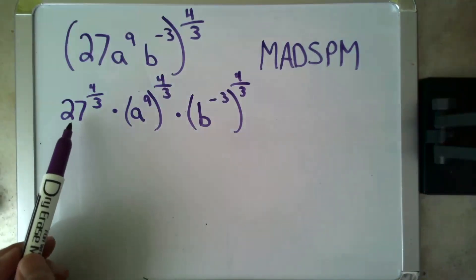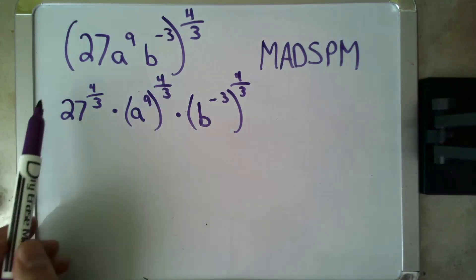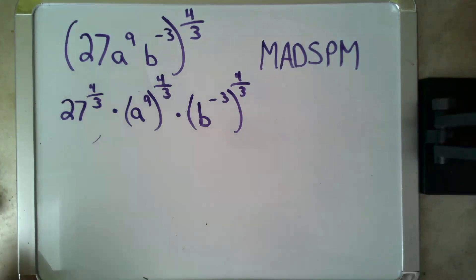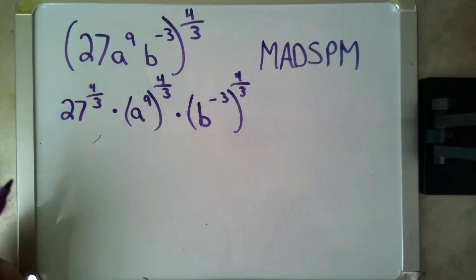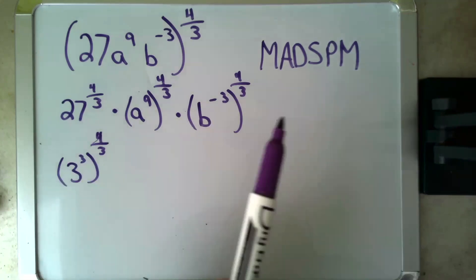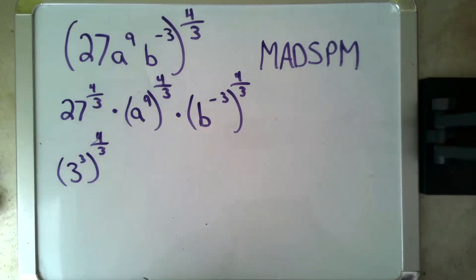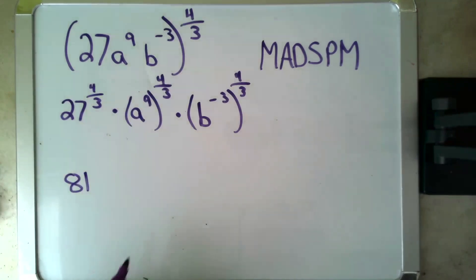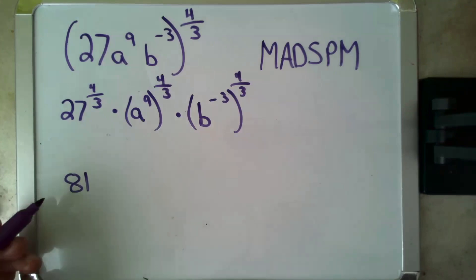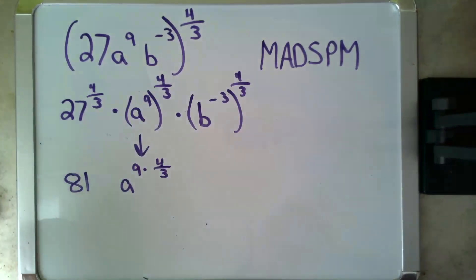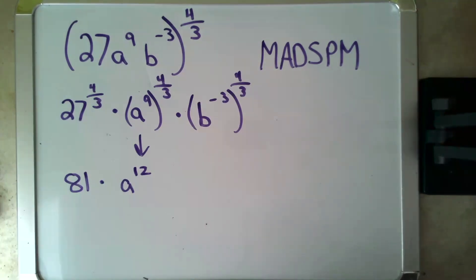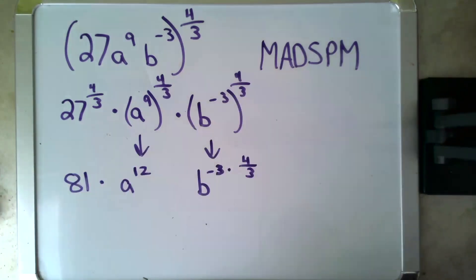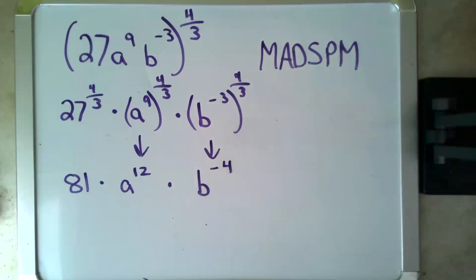This time, let's approach our 27 differently. Instead of turning it into a root and exponent form right away, let's start by noticing that 27 can be rewritten as three to the third. So three to the third to the four-thirds — raising to a power means I multiply — becomes three to the three times four-thirds, which is three to the fourth, or 81. For a to the ninth to the four-thirds, I get a to the nine times four-thirds, which is a to the 12th. And b to the negative three to the four-thirds becomes b to the negative three times four-thirds, which is b to the negative four.